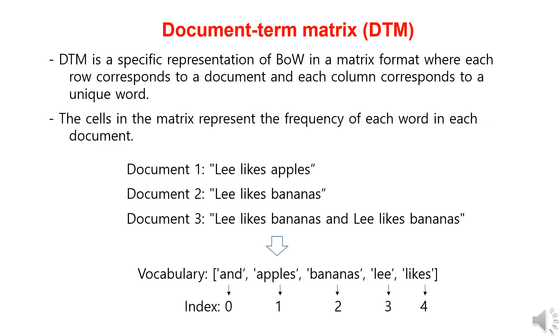Here, let's consider three sentences: Lee likes apples, Lee likes bananas, and Lee likes bananas and Lee likes bananas. First, we'll tokenize the sentences into words and build a vocabulary list by removing duplicates. So for the three sentences, we have a vocabulary list consisting of the words and, apples, bananas, Lee, and likes.